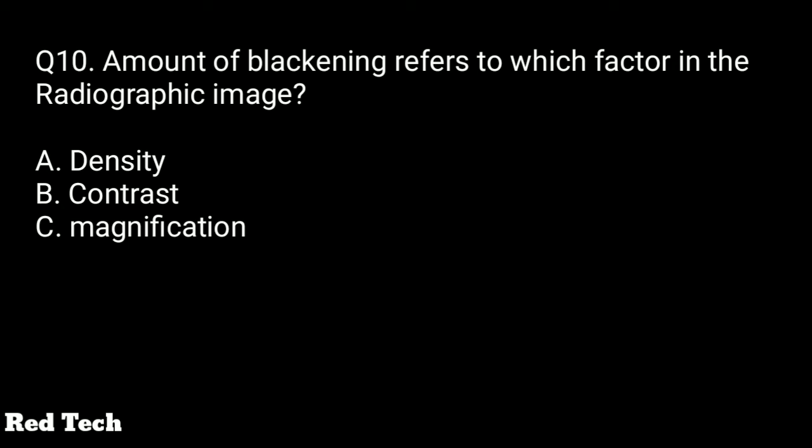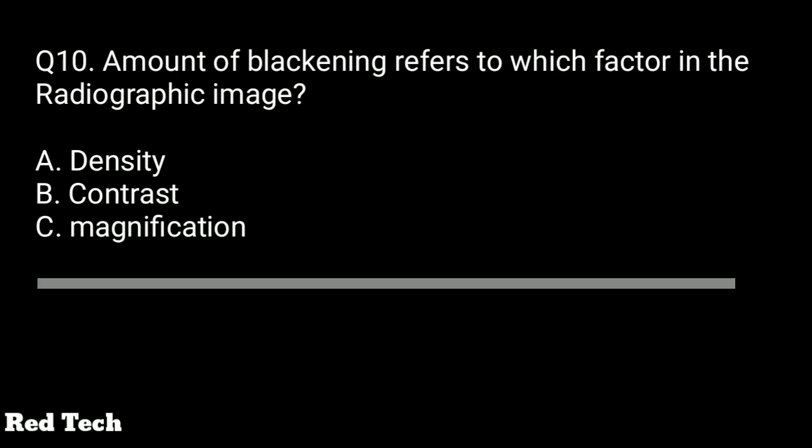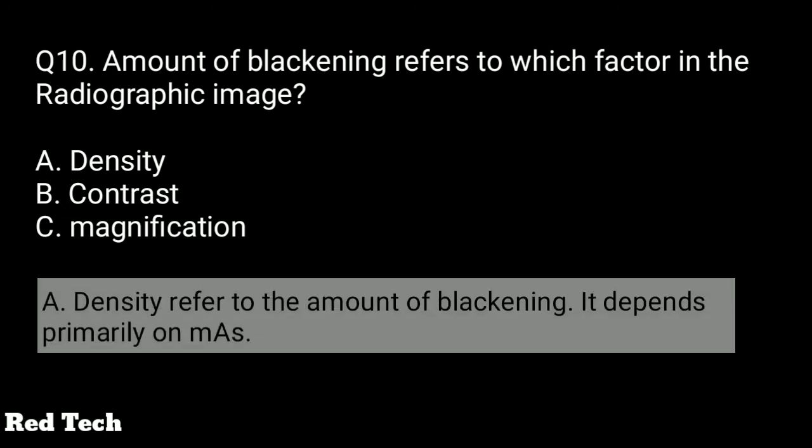Question number ten: the amount of blackening refers to which factor in the radiographic image? Options are density, contrast, or magnification. The right answer is density. Density refers to the amount of blackening and it depends primarily on mAs (milliampere-seconds).